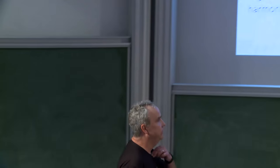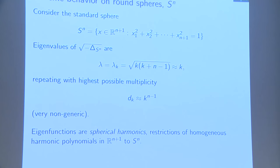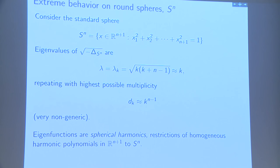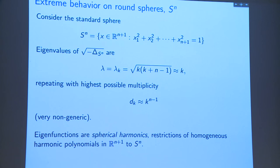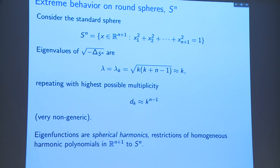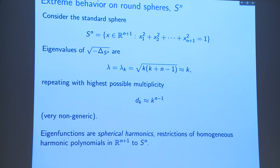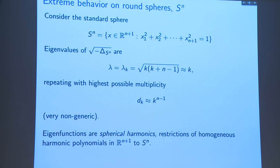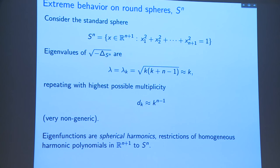The sphere is the worst case for everything I'm talking about today. The n-sphere is a subset of R^{n+1} given by that equation. The eigenvalues of the square root of the Laplacian on the sphere are basically k times square root of k(k + n − 1), and they repeat with very high multiplicity — the highest multiplicity allowed because of the sharp Weyl formula. What's going on is a lot of periodicity: all geodesics are periodic with period 2π, they're all great circles.